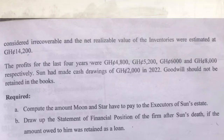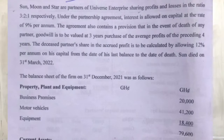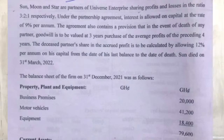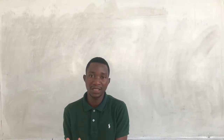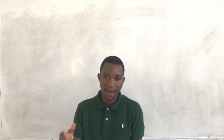Before we start solving the question, let's analyze it. Under the partnership agreement, interest is allowed on capital at a rate of 9%, so each person needs to receive 9% on his capital. But mind you, Sun dies within the year — not at the end nor the beginning. We prepare our accounts at the end of the financial year, which is 31st December, but Sun dies on 31st March. So we need to calculate his interest on capital as at that date and credit his capital account.